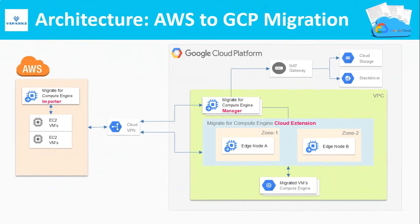This is the same architecture diagram we have seen in the last slide, but now it's with respect to AWS and GCP migration alone. Now let us see the step-by-step migration approach that we need to follow in order to migrate VMs from AWS to GCP.